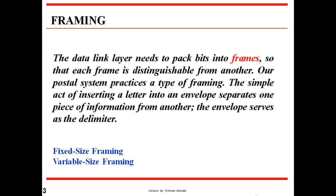Framing. The data link layer needs to pack bits into frames so that each frame is distinguishable from another. Our postal system practices a type of framing — the simple act of inserting a letter into an envelope separates one piece of information from another. The envelope serves as a delimiter. Framing is of two types: fixed size framing and variable size framing.